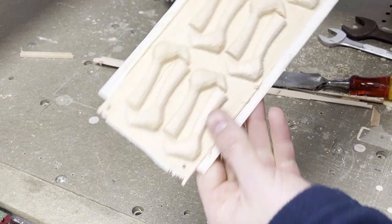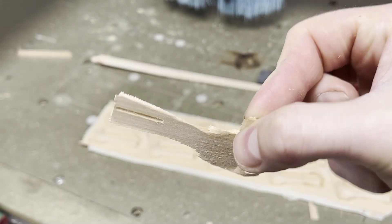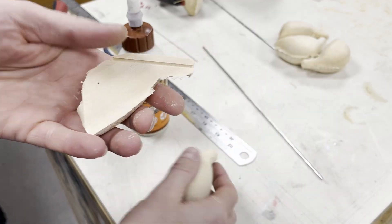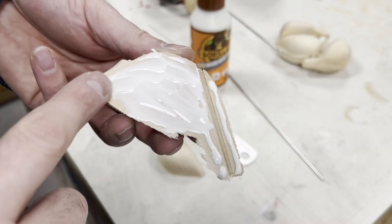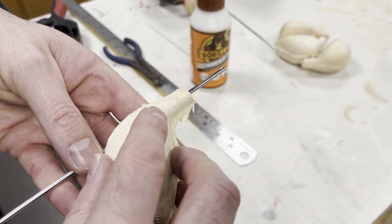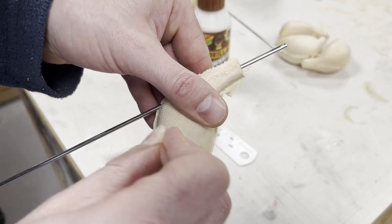I machine the parts in two stages: first a roughing pass to remove most of the material, then a finer finishing pass to bring out the clean contours. Once both halves are complete I glue them together using the internal locating holes to keep everything perfectly aligned.